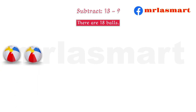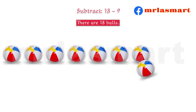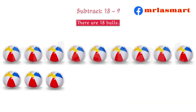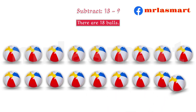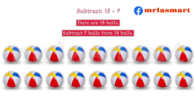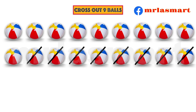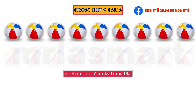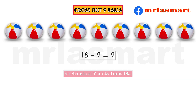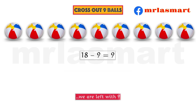There are 18 balls. Subtract 9 balls from 18 balls. Cross out 9 balls. Subtracting 9 balls from 18: 18 minus 9 equals 9. We are left with 9.